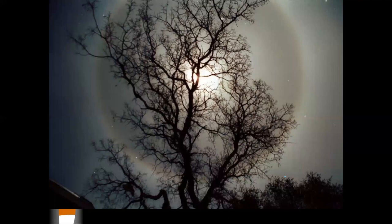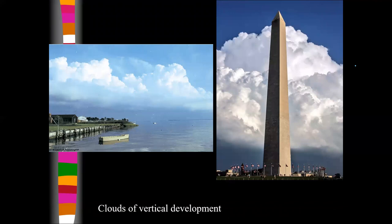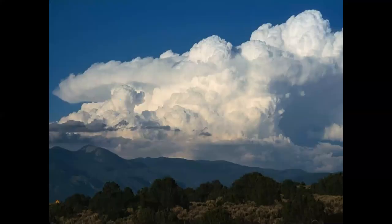There's another halo around the moon — you can actually see the rainbow effect here. These are clouds of vertical development — these things just explode. If you remember that time-lapse video at the beginning of this chapter showing clouds growing higher and higher, that's just a heat monster.